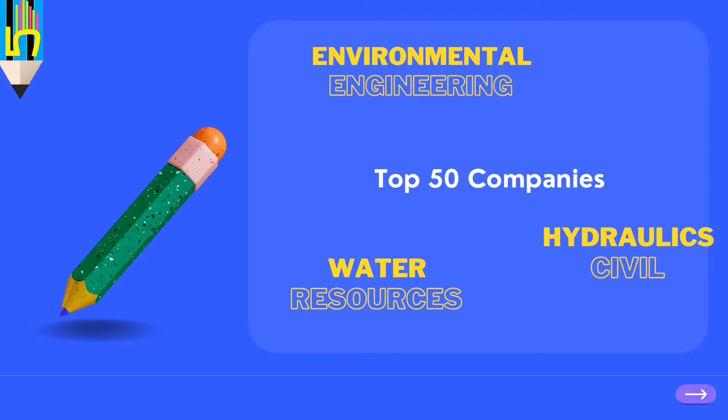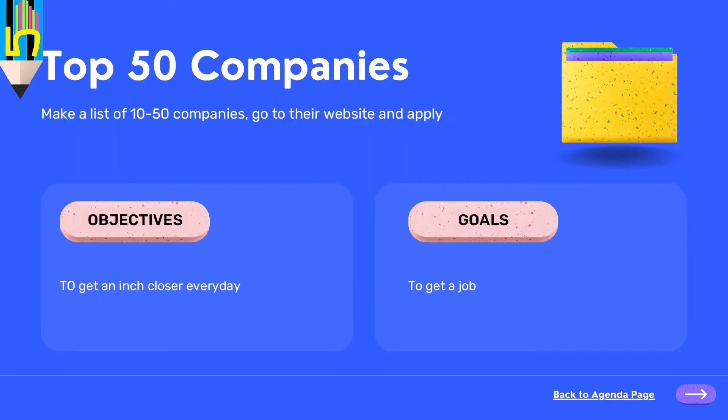You can create this list on your own, or we have already created a list of 50 relevant companies that are likely to recruit people like us. You can simply go to their website, register, and wait, or you can send them an email and wait for their reply.